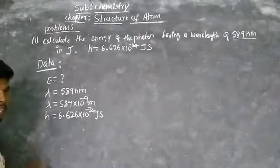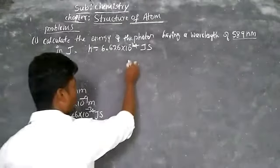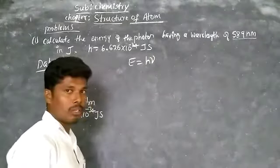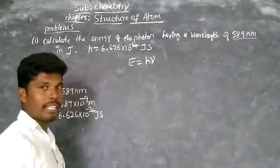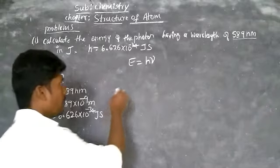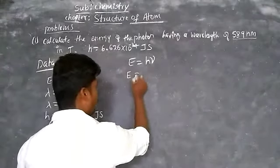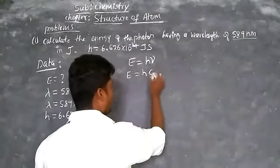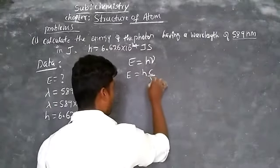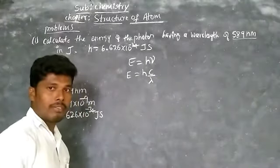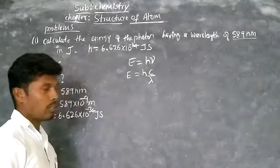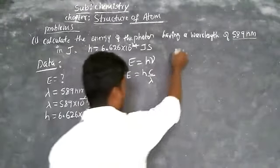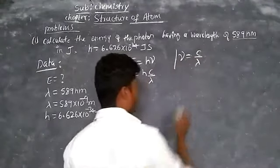You know the formula to calculate energy: E equals H times nu. According to Planck's quantum theory, E equals H·nu, where nu equals C divided by lambda. So E equals H times C divided by lambda. E is directly proportional to C and inversely proportional to wavelength, where nu equals C/lambda.